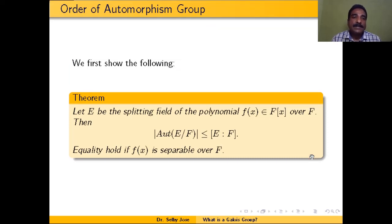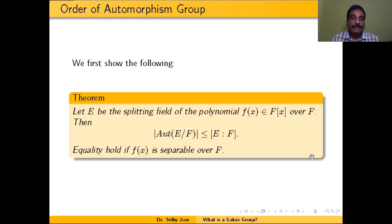The theorem states the following. Let f(x) be a polynomial in F[x], where F is a field and E is the splitting field of f(x) over F. Then the order of the automorphism group of E over F is less than or equal to the degree of the extension E over F. And equality holds — that means the order equals [E:F] — if f(x) is a separable polynomial over F.